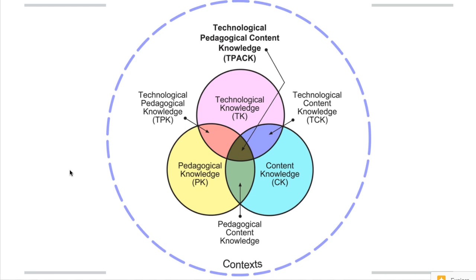Another model I use frequently is Bronfenbrenner's ecological theory — a series of surrounding circles I use to think about culture, society, and the different forces that impact cognition, among other things. I bring in a surrounding circle that says we also have to think about the different contexts in which we're using TPACK: different grade levels, different purposes, different environments. There are different contexts that impact all of this.